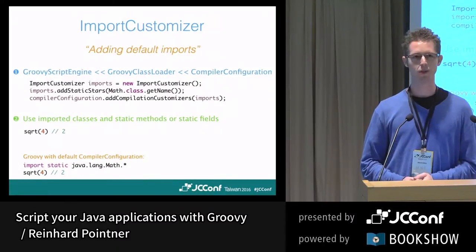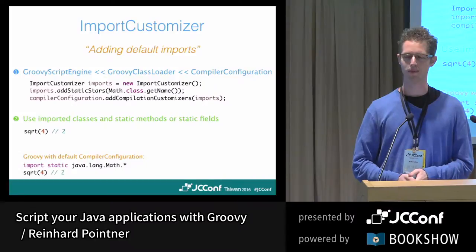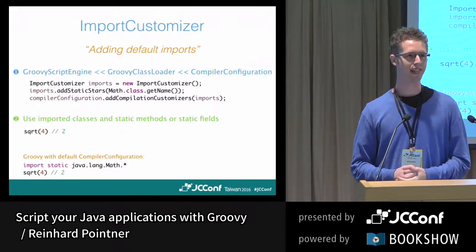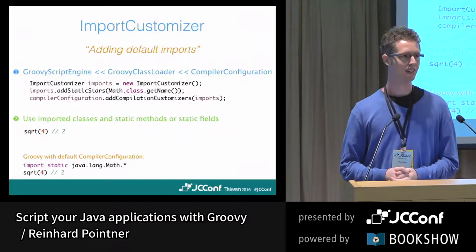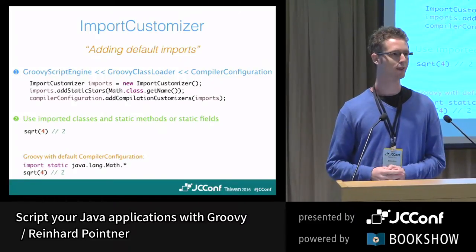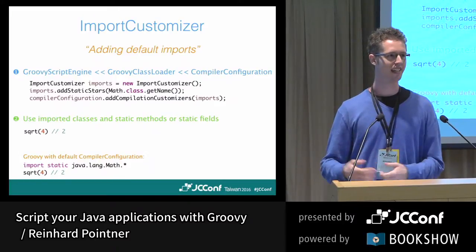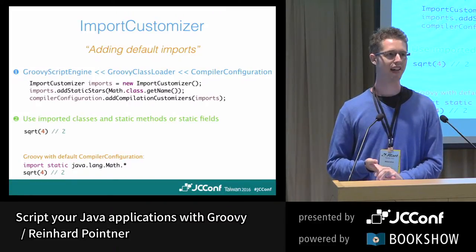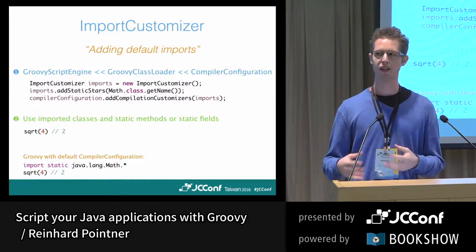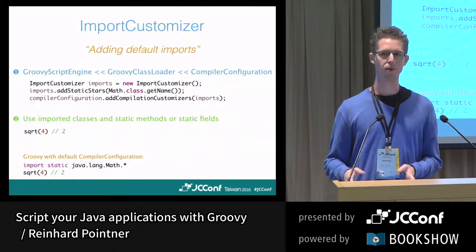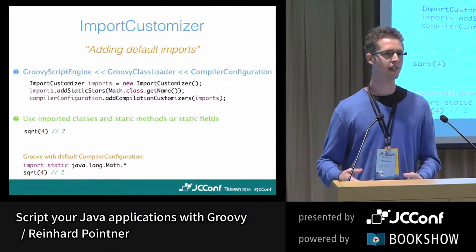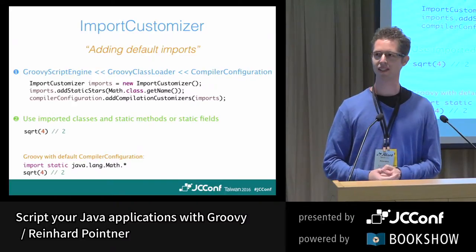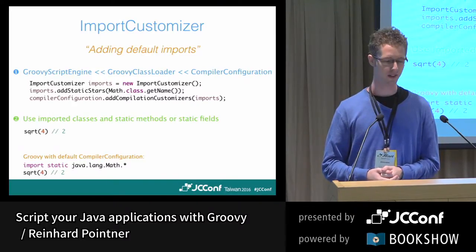There are also easier things we can do to make life easier for scripting users. For example, if a Groovy script makes heavy use of math functions, we might want to pre-define the import for 'java.lang.Math.*' so that users can just call 'sqrt' directly rather than writing 'Math.sqrt'. In Groovy, classes like java.util are already imported by default, but we can also pre-import our own domain-specific business logic to reduce boilerplate for scripting users.